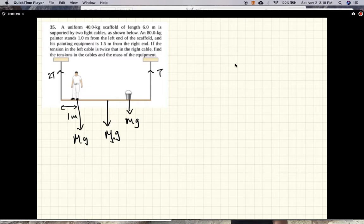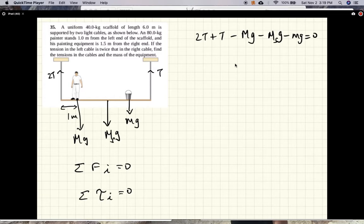Okay, so for equilibrium, we need this to be true, and we want the torques to be true. So, let's write down these two equations. So 2T plus T minus mg minus ms times g minus mg should equal 0, so 3T equals m plus ms plus mg. That's one equation.